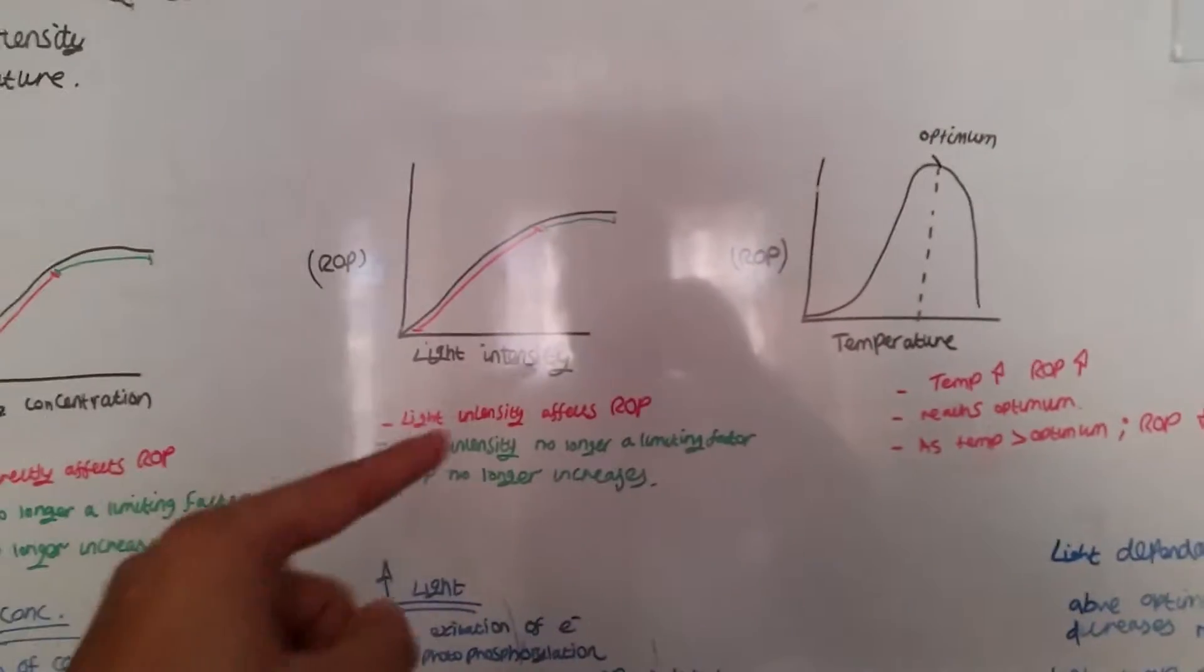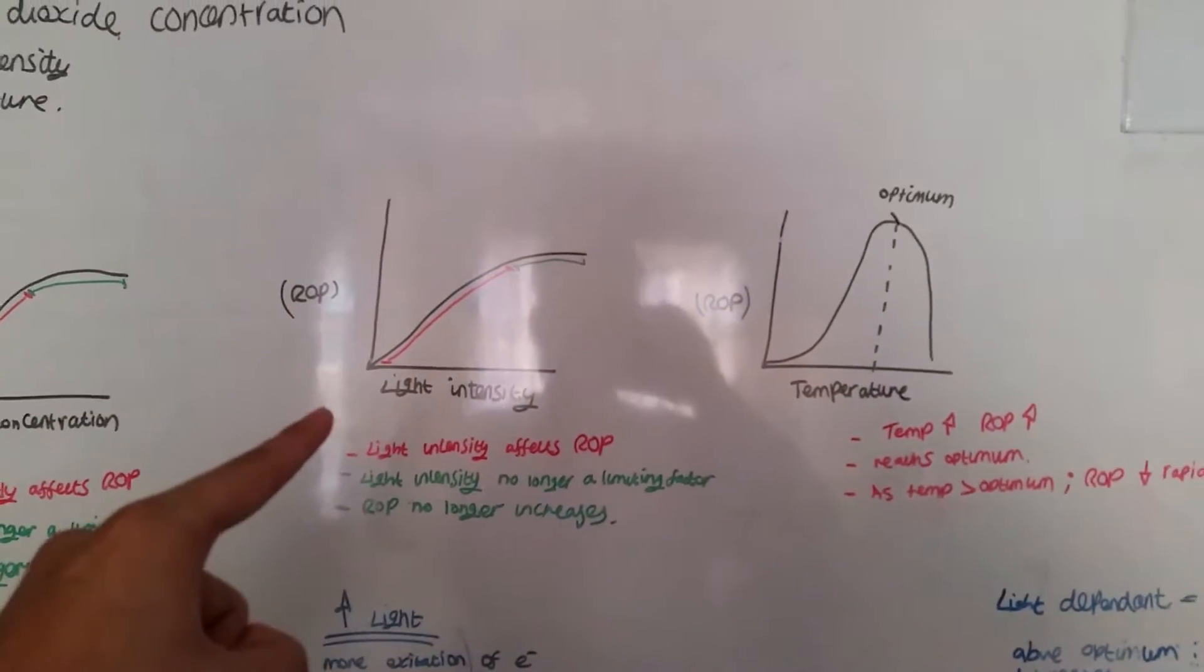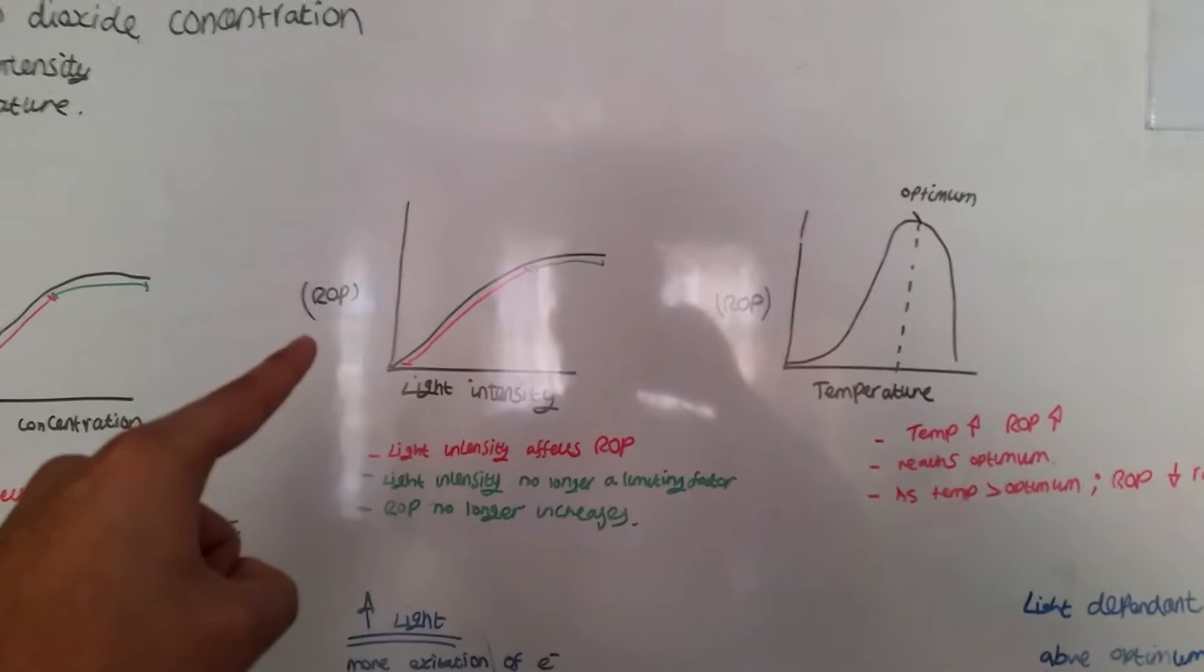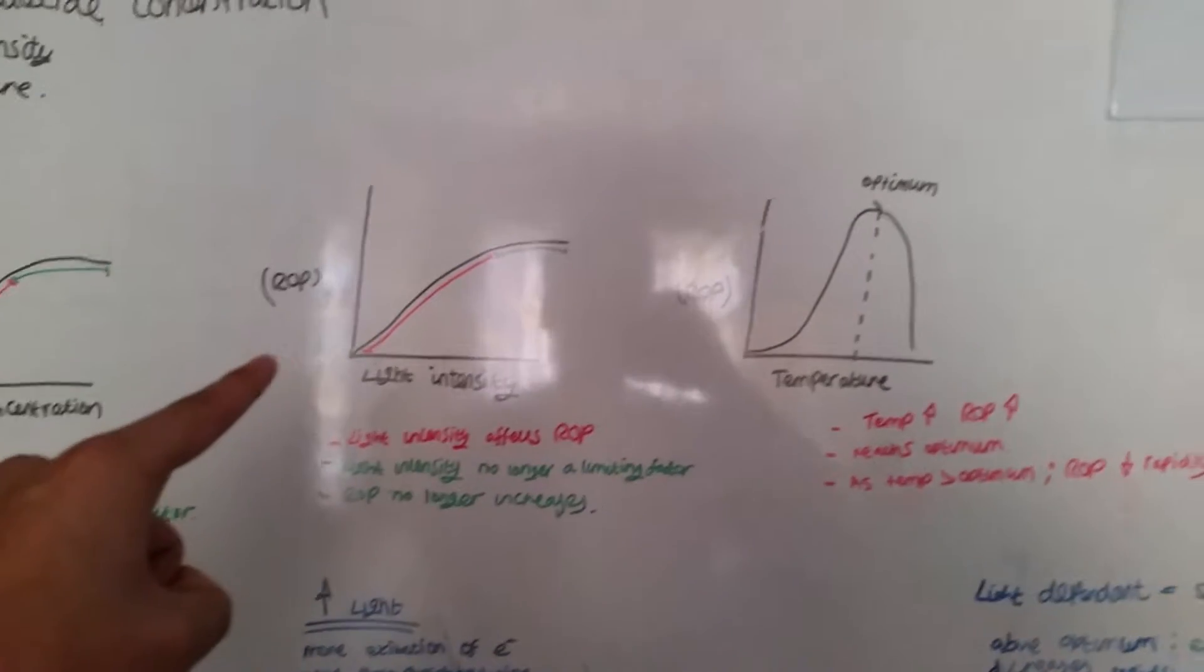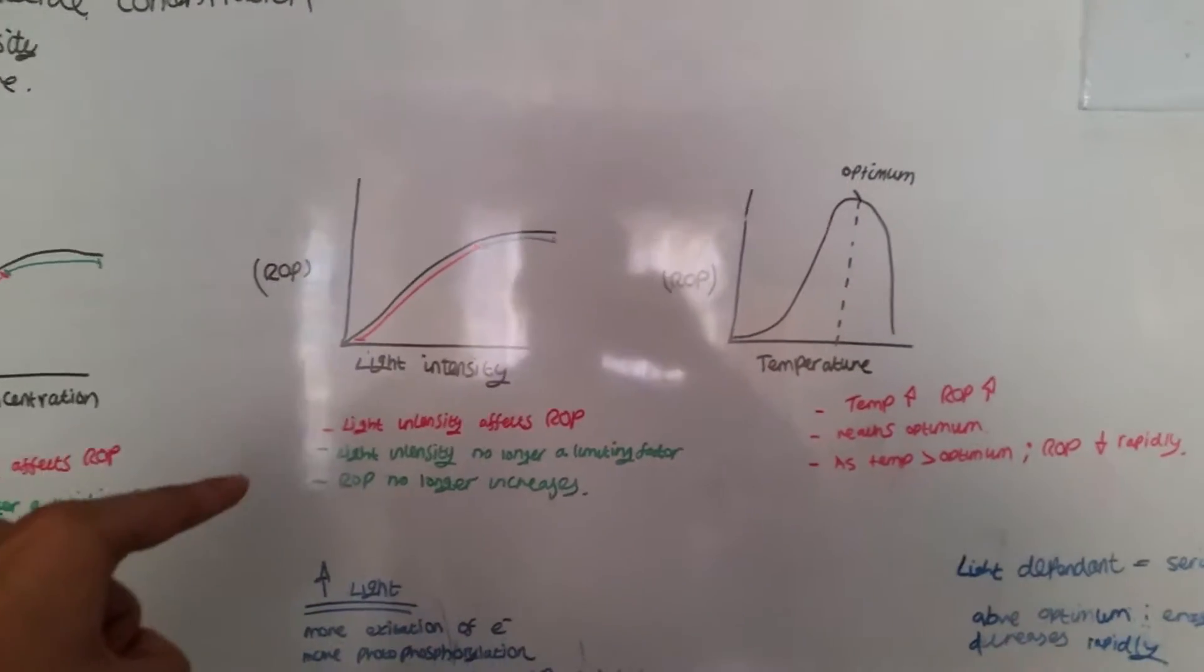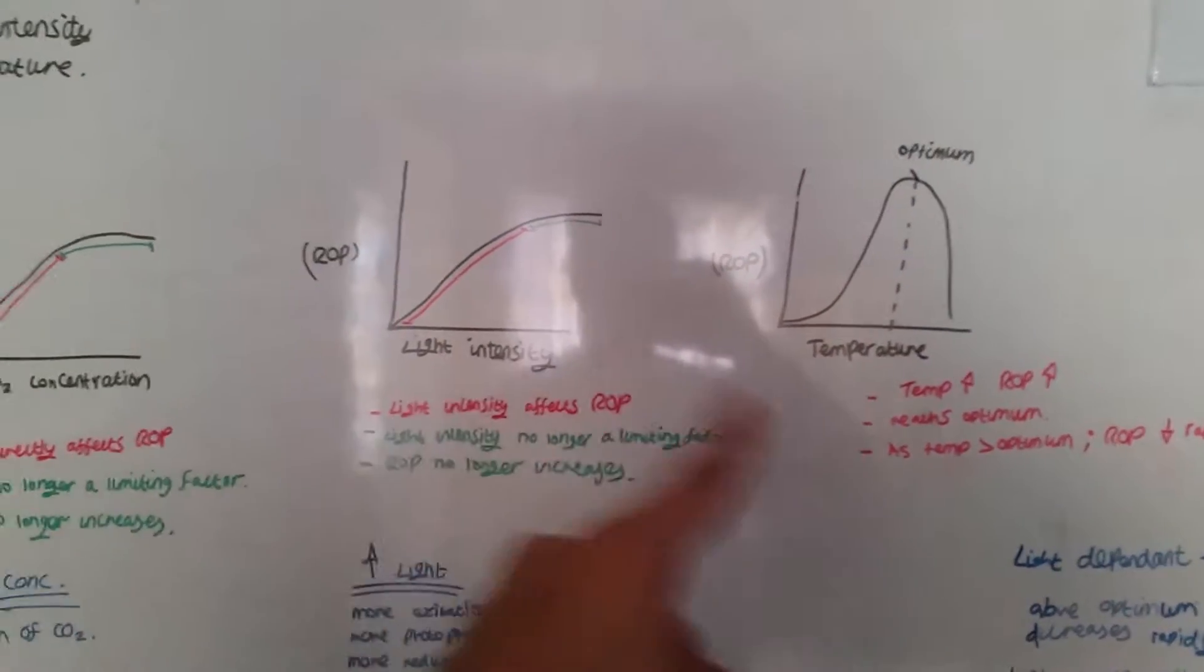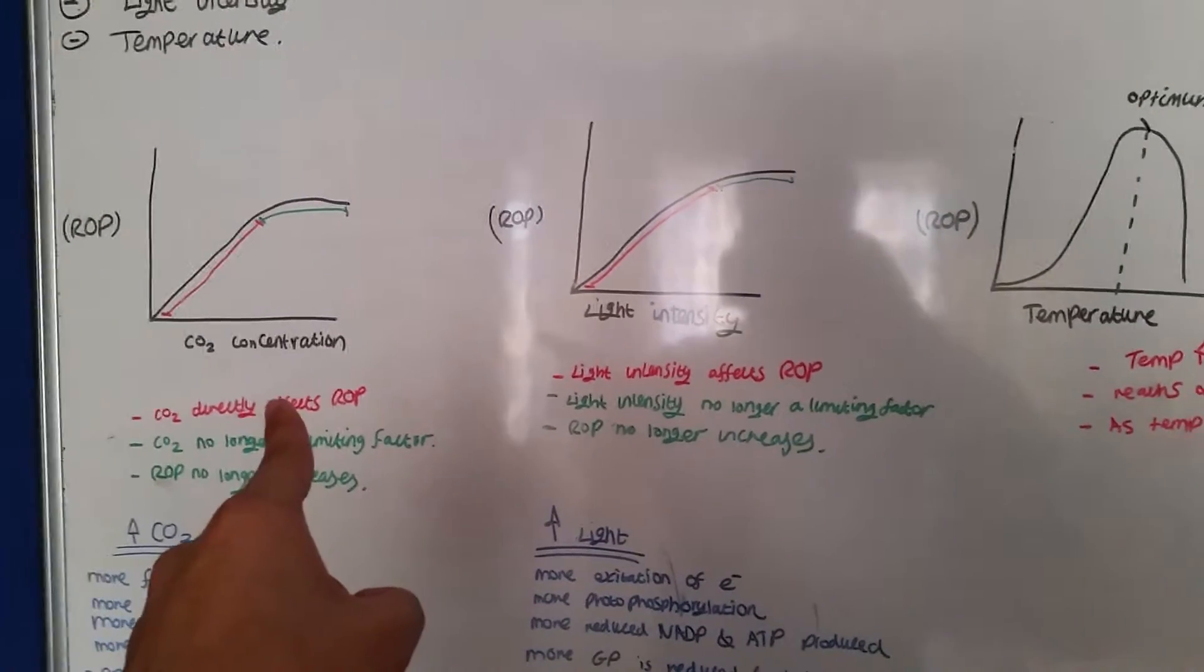Same thing with light intensity. As light intensity increases, ROP increases. Eventually, ROP will slow down or plateau. This is because there is another limiting factor. This could be temperature or CO2 concentration.